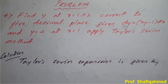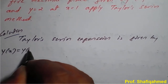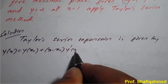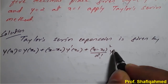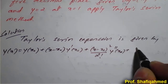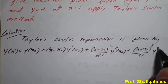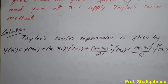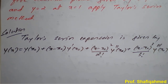The Taylor's series expansion is given by: y(x) = y(x₀) + (x - x₀)·y'(x₀) + (x - x₀)²/2! · y''(x₀) + (x - x₀)³/3! · y'''(x₀) + ... Since they haven't mentioned a degree, I will take up to the third degree, meaning up to y'''.